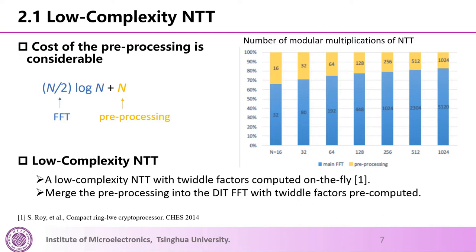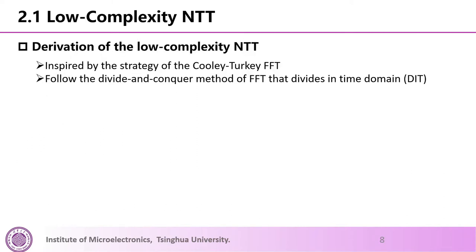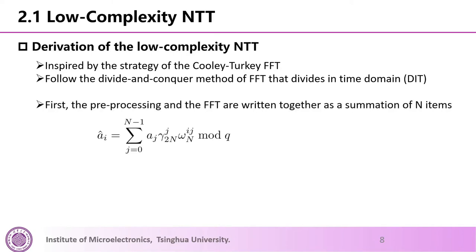A low-complexity NTT with twiddle factors computed on the fly was proposed by Rui. We follow that work but with twiddle factors pre-computed. This method merges the preprocessing into the DIT FFT by merely changing the value of the pre-computed twiddle factors. The derivation is inspired by the Cooley-Tukey FFT strategy. We follow the divide-and-conquer method that divides in the time domain, and the preprocessing and FFT are written together as a summation of N terms.